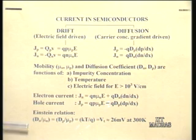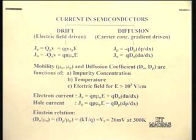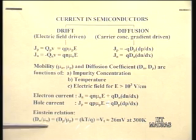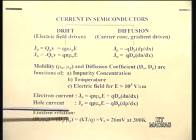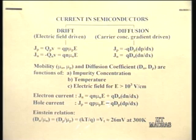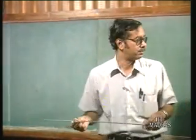Mobility and diffusion coefficients are related through the Einstein relation: the hole diffusion coefficient divided by hole mobility equals the electron diffusion coefficient divided by electron mobility, and equals kT/q — the thermal voltage — which is approximately 26 millivolts at room temperature.